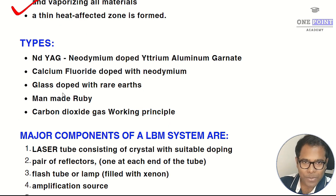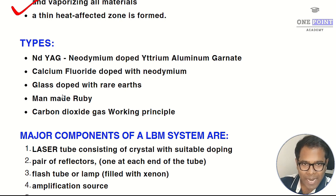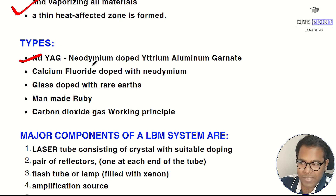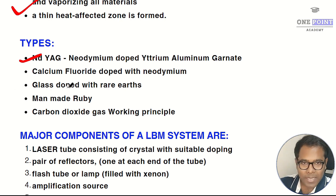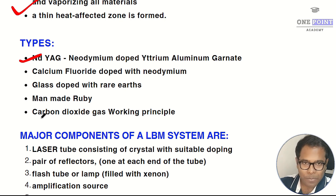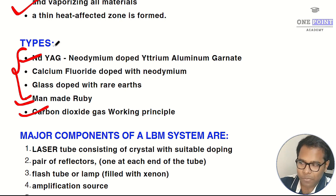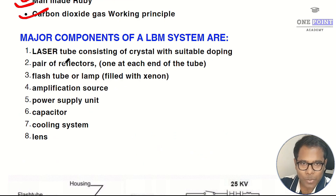Depending on which type of crystal is used to produce the laser, laser beam machining is categorized into five types: first is Nd:YAG (neodymium-doped yttrium aluminium garnet), the most popular; second is calcium fluoride doped with neodymium; third is glass doped with rare earth metal; fourth is man-made ruby; and the last one is carbon dioxide gas. The top three are most commonly used, with Nd:YAG being the most popular overall.